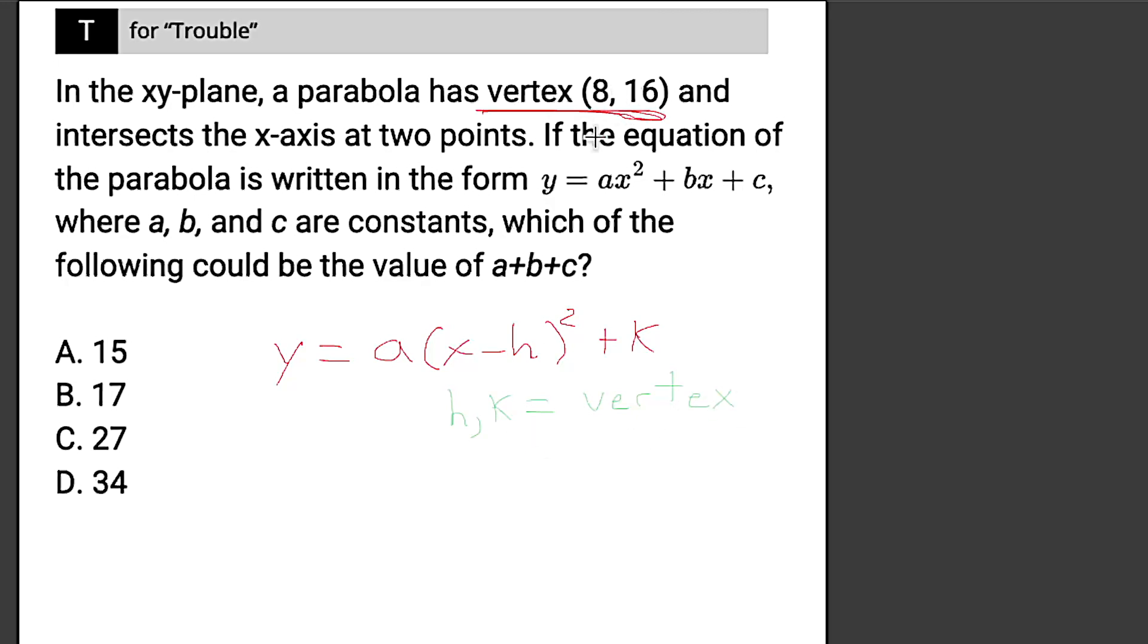So if we plug this in, we get y equals a times x minus 8. And why is it not positive 8? Because in the formula it's minus h. So even though in the vertex it's a positive 8, we're subtracting that positive 8. x minus 8 squared plus 16. And since it's plus k, we just keep that positive. So that is step one.